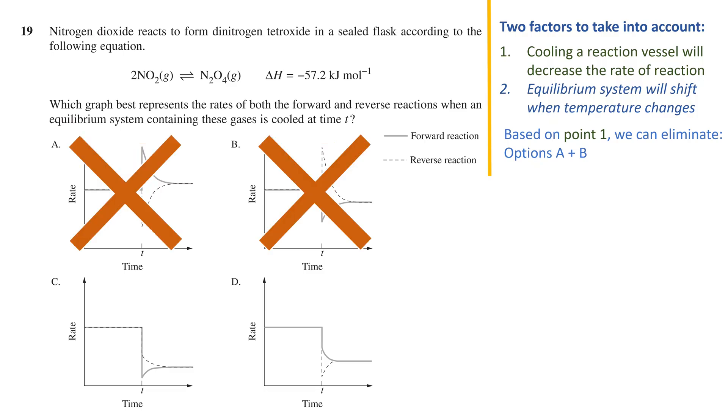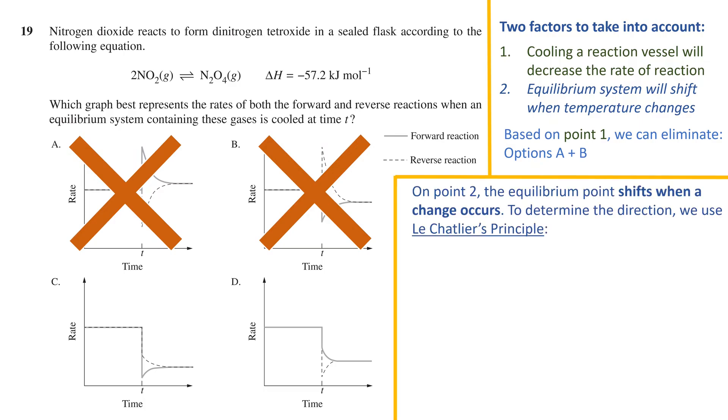Moving on to point 2, we know that for a system that has reached equilibrium, when a change to the temperature occurs, a certain reaction will be favored, and a new equilibrium point will be established. To determine which is favored, we use Le Chatelier's principle, which states that the system will favor the reaction, or side, that minimizes the change that has occurred.